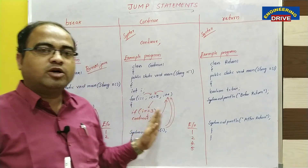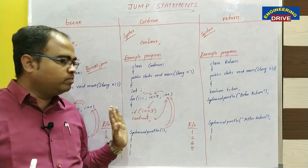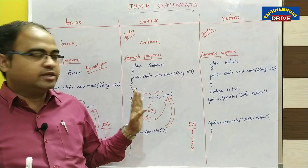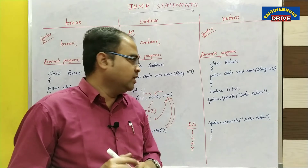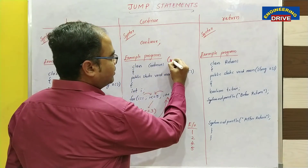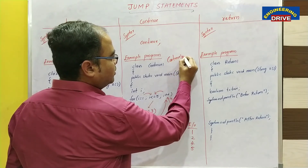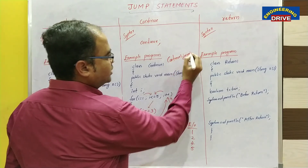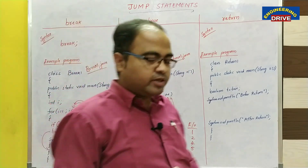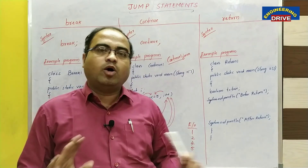The purpose of the continue keyword is: when i was 3, the condition became true, control went to continue, and continue took the control to the next iteration — skipping the display of 3. Break keyword takes the control out of the loop; continue keyword takes the control to the next iteration. Save this second program as continue1.java, then compile and execute it to see this output.